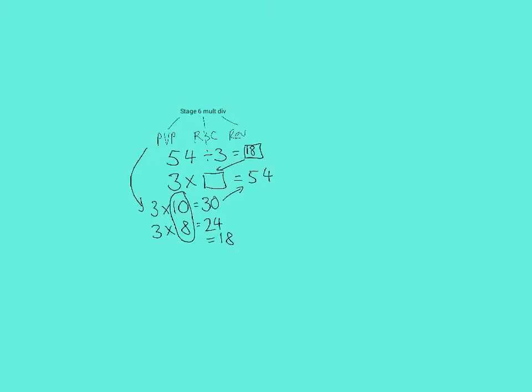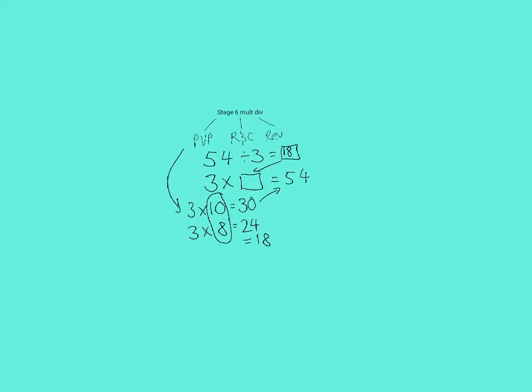Now to use rounding and compensating. I'm going to round a number up so that it goes past the answer of 54. So in this scenario, I would do 3 times 20 is equal to 60. I know I need to get to 54. So how many groups of 3 will I need to subtract? Well, that is going to be minus 3 groups of 2.